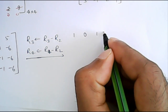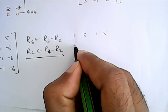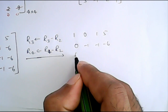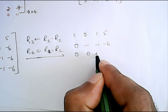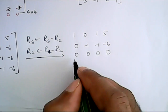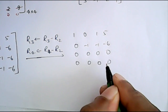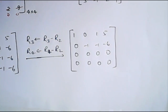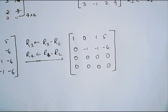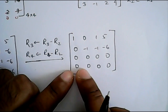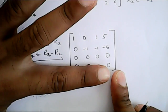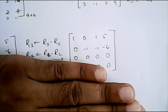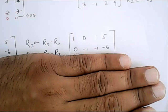The resultant matrix becomes: Row 1: 1, 0, 1, 5. Row 2: 0, −1, −1, −6. Row 3: 0, 0, 0, 0. Row 4: 0, 0, 0, 0. The last two rows are completely zero, so we have omitted these two rows entirely.